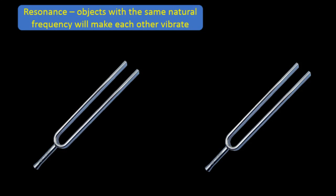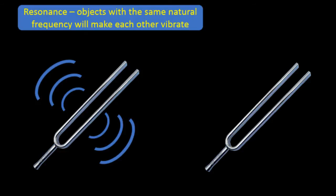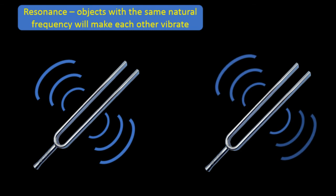Finally, we talk about resonance. Resonance is the phenomenon where objects of the same natural frequency will make each other vibrate. So, for instance, if we have these two tuning forks, and they are exactly the same and have the same natural frequency, if we tap one and make that one vibrate, those vibrations will travel through the air and affect the other tuning fork, and it will cause that one to vibrate the same. So, if you have two identical tuning forks, if you tap one and it makes a sound, the other one will also make the same sound.